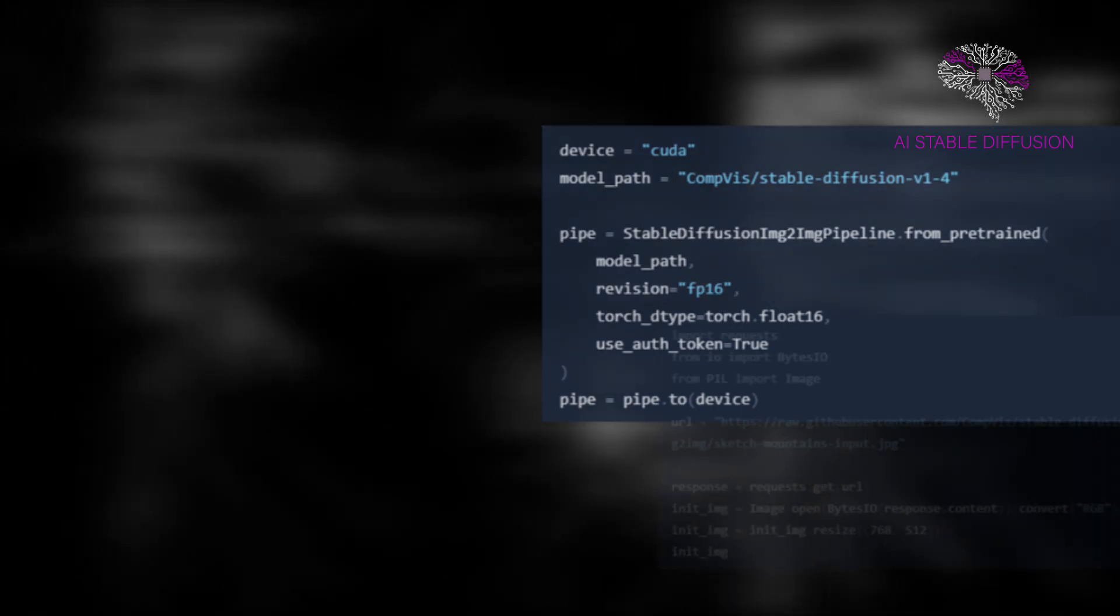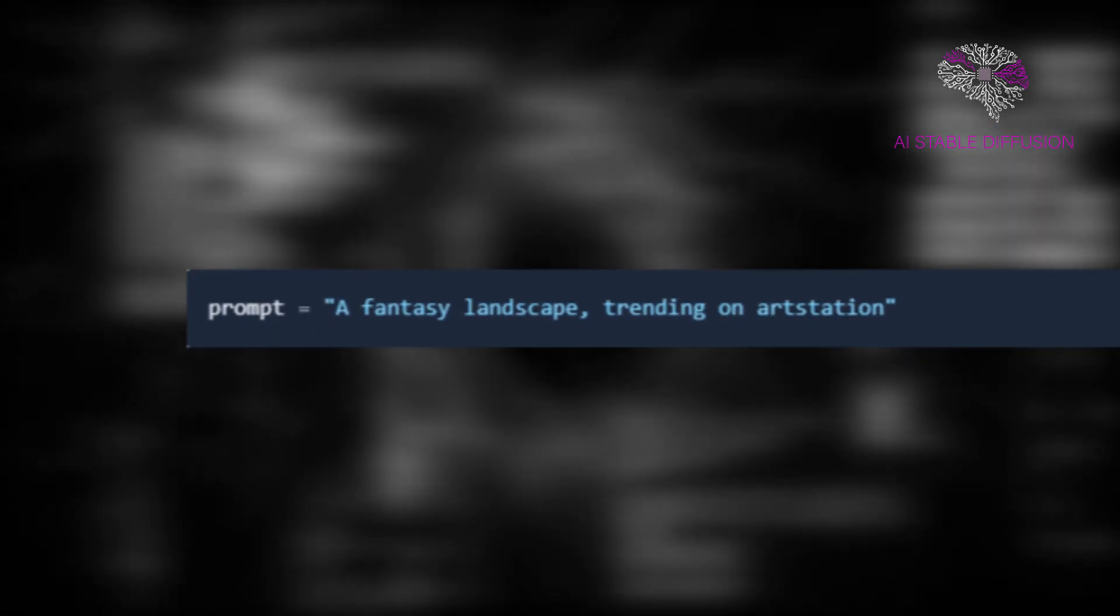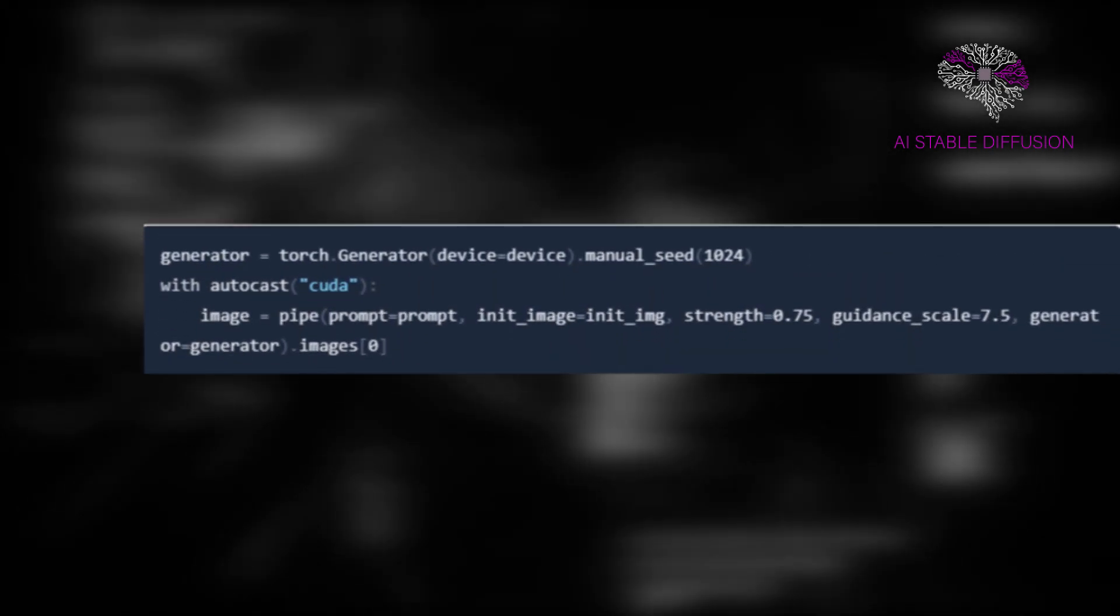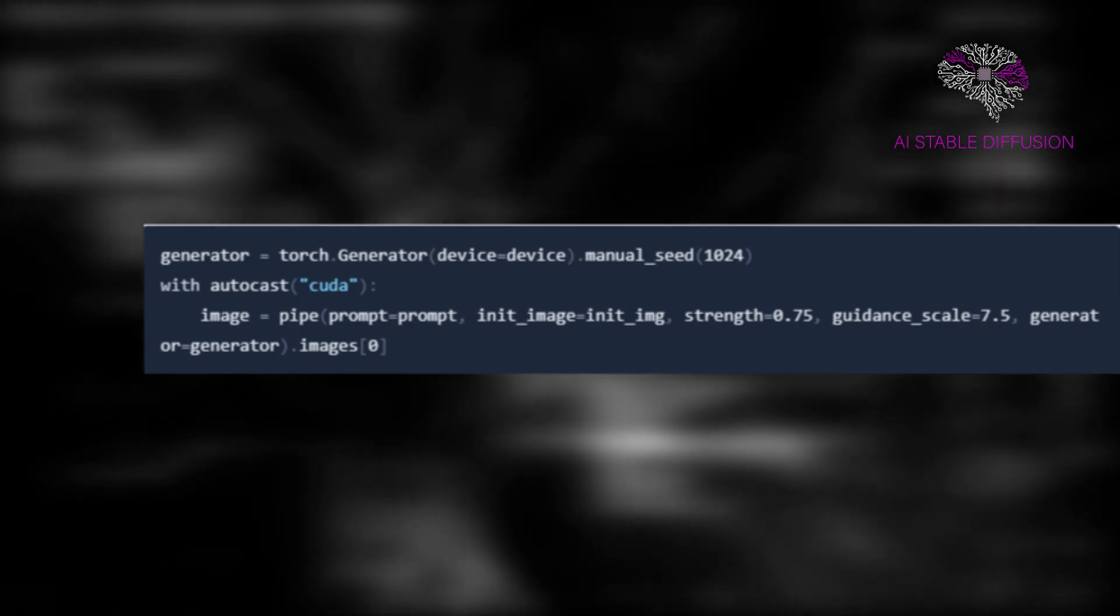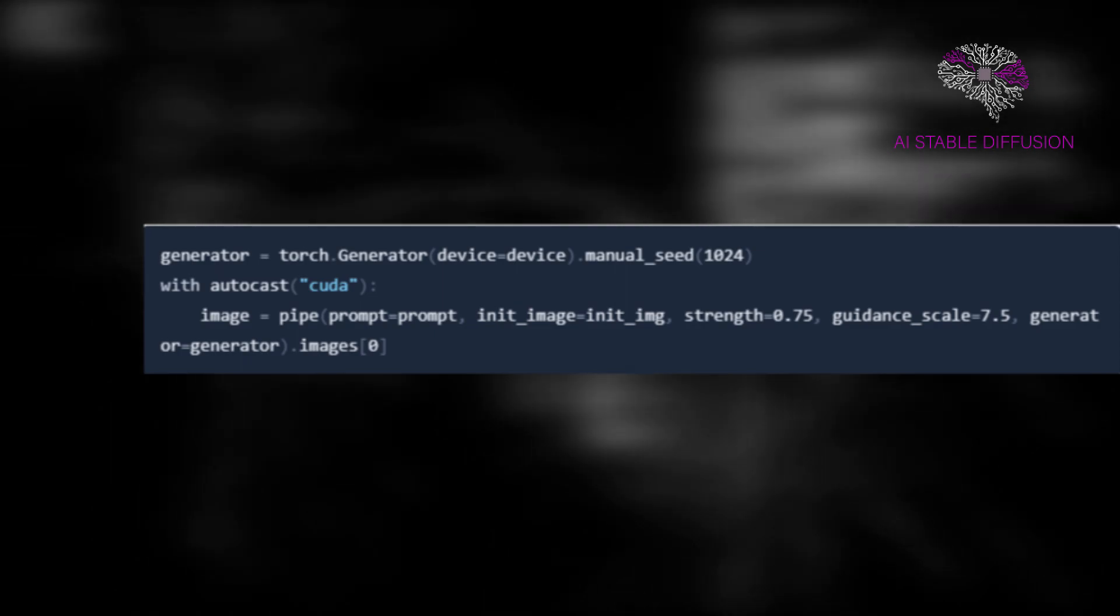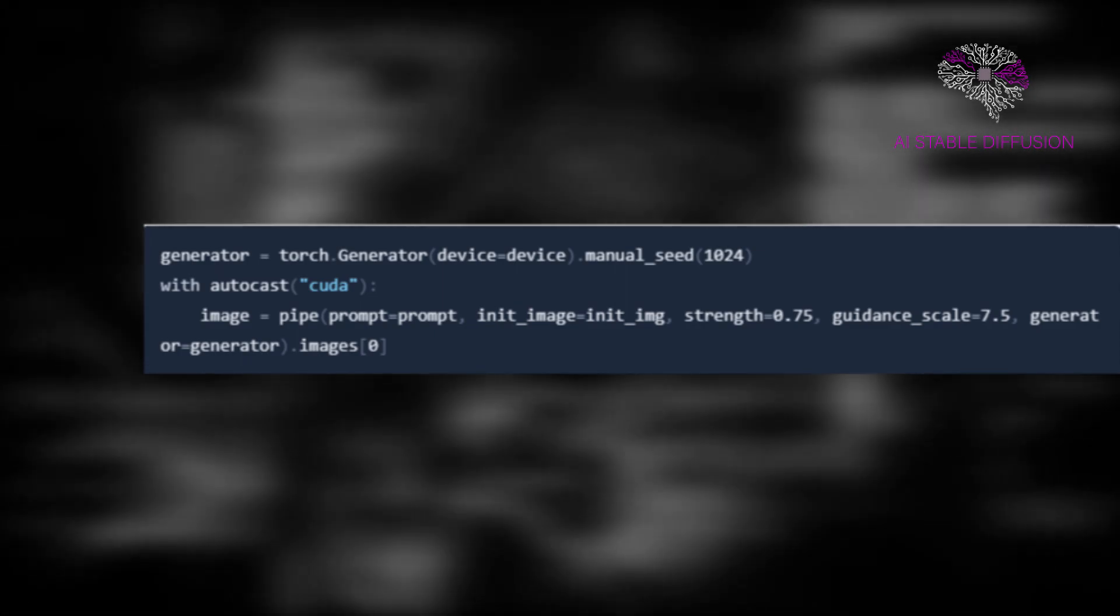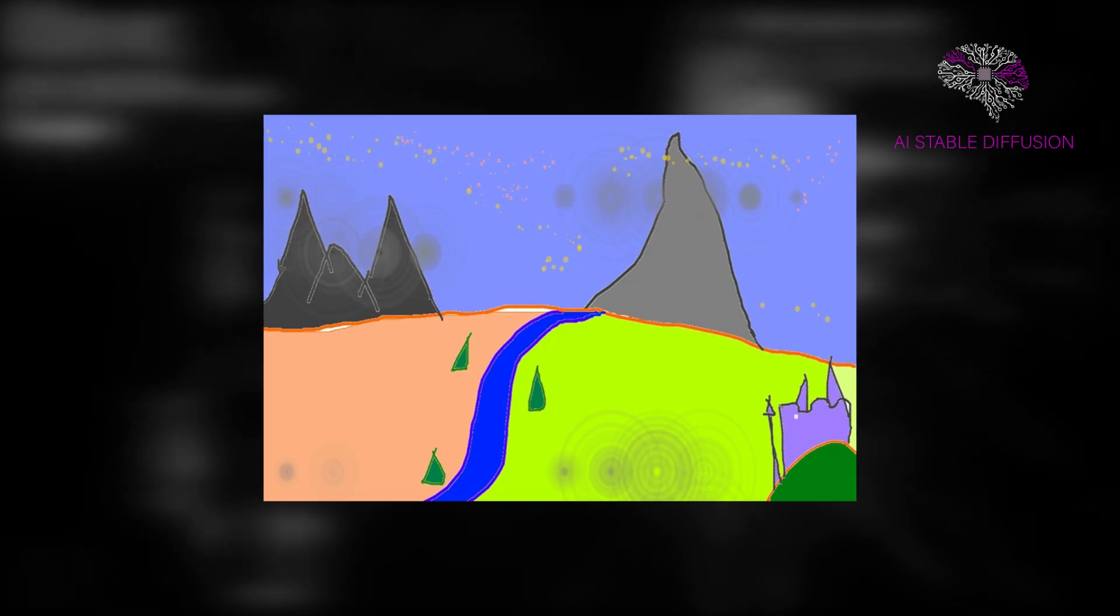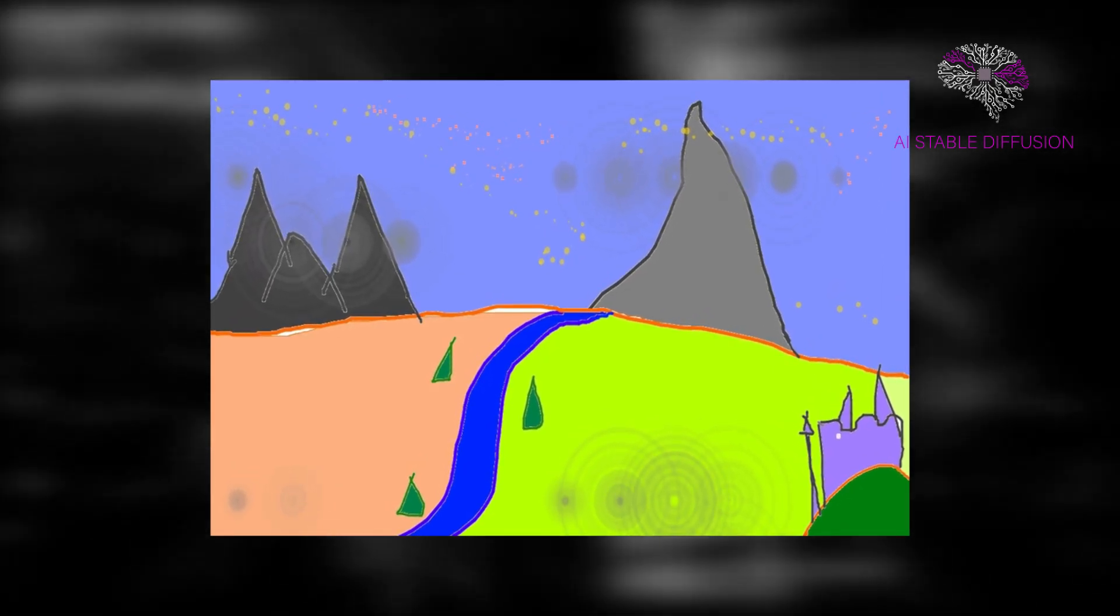To pass a picture to the pipeline, download and prepare an initial image. Run the pipeline after defining the prompts. Strength is a number between 0.0 and 1.0 that regulates how much noise is added to the input image. Numerous variations are possible with values that are close to 1.0, but they will also result in images that are not semantically consistent with the output. Simply type the following command in Colab to print the image. And there you have it, a stunning piece of art created by AI from a straightforward sketch.